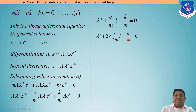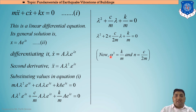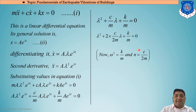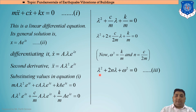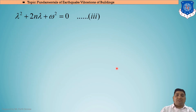We know that ω = √(K/M), so ω² = K/M. We substitute C/2M as n (the damping coefficient). Placing ω² and n into the equation gives: λ² + 2nλ + ω² = 0. This is equation number 3, from which we will find the roots.